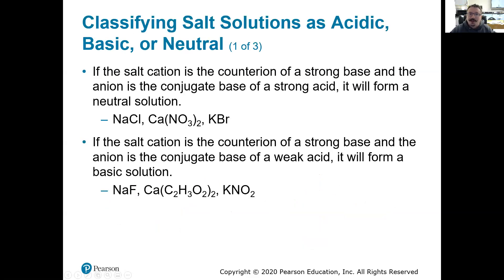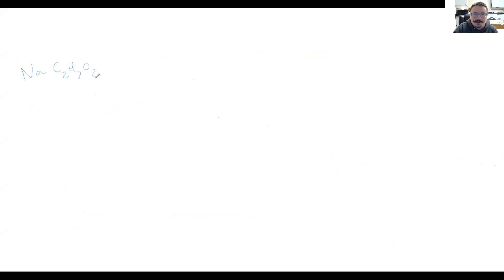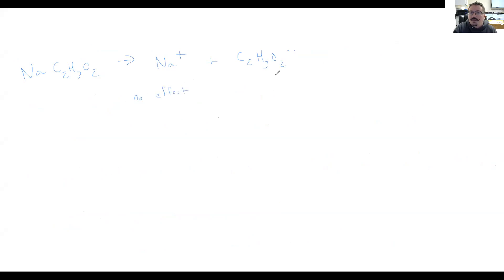So how do we classify salts? We look at the component ions. If we had sodium acetate and dumped it into water, we get Na+ and the acetate ion. Na+ is the conjugate acid of a strong base, so it's not going to have any effect. Acetate is the conjugate base of a weak acid, so it will give us a slightly basic pH. Since Na+ has no effect and acetate makes it basic, our final solution will be basic.